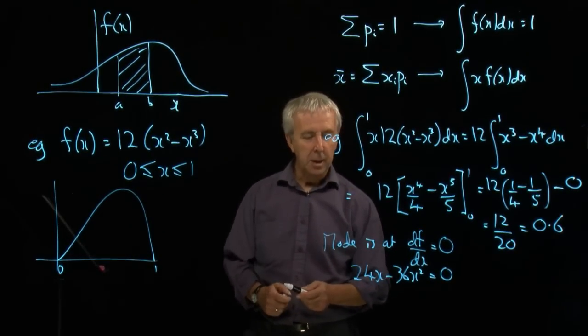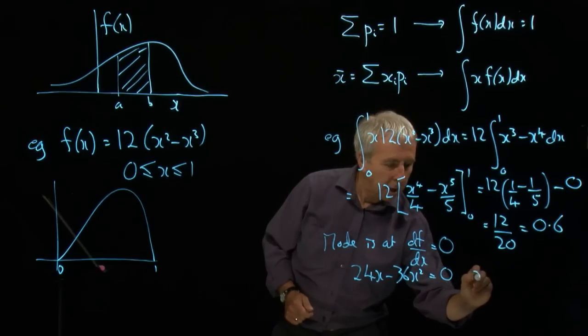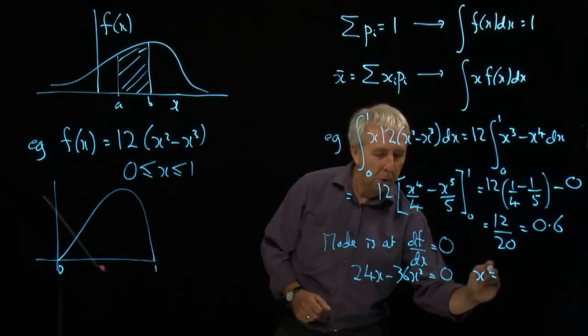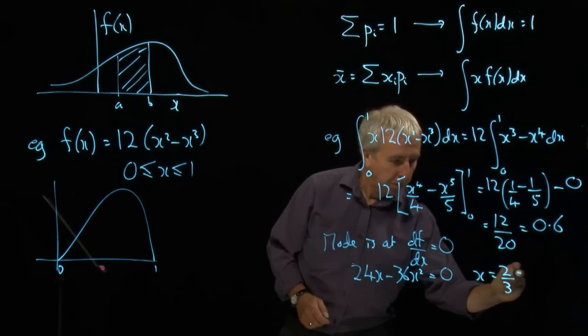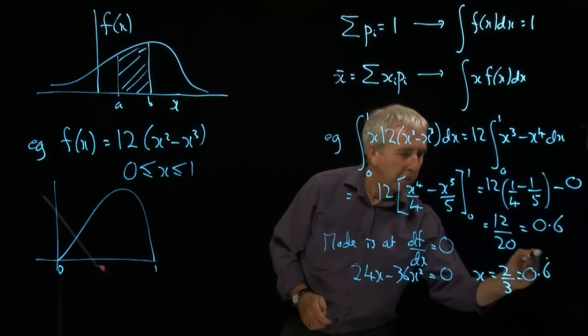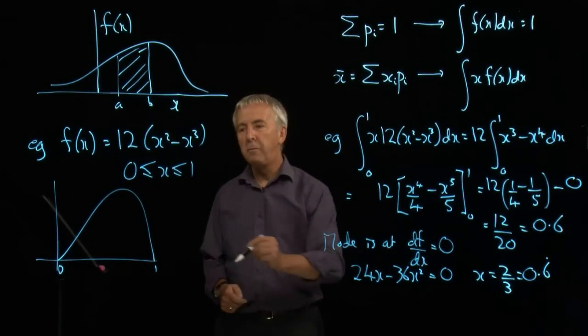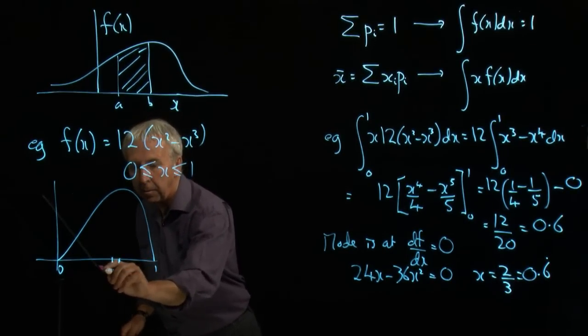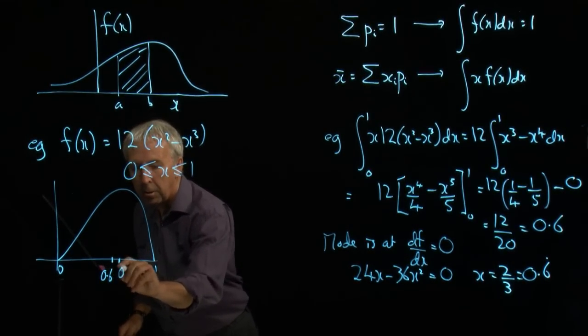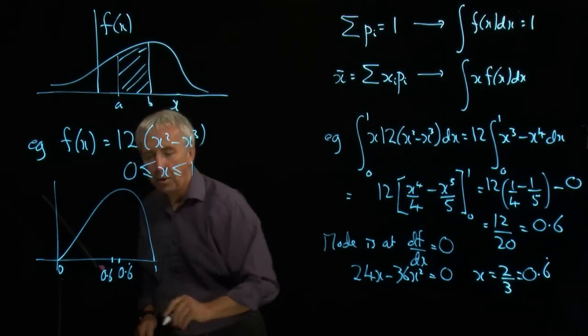That will equal 0 to give you a maximum or minimum. And if I cancel 12x, cancel x's, I get x = 24/36 or 2/3, 0.6 recurring. So that's the modal value just there. And the mean is about here. They're not the same.